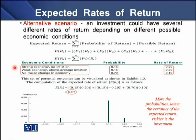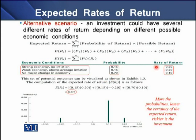In the example we have three scenarios. A strong economy with no inflation has a probability of 0.15 or 15%, with a rate of return of 20%. A weak economy with above-average inflation also has a probability of 15%. A third condition with no major change in the economy is assigned a probability of 0.70 or 70%. When we multiply each probability by its individual rate of return and sum them up, the expected value is 0.07 or 7%. This is basically the weighted rate of return.